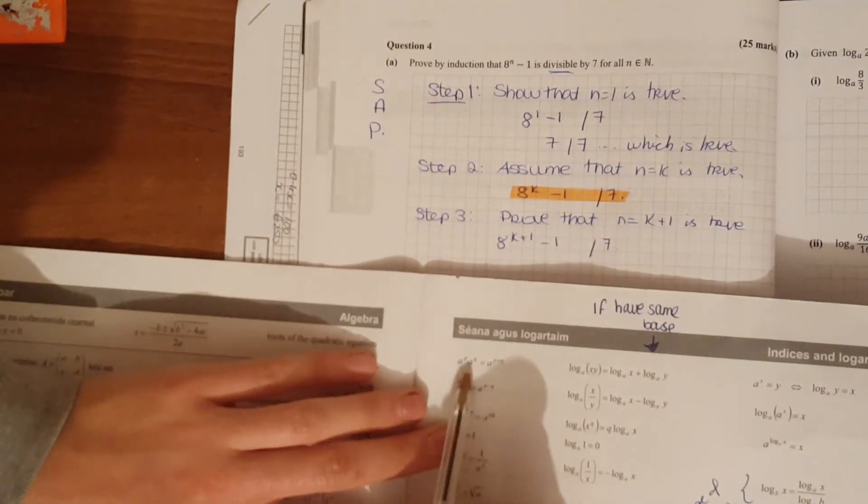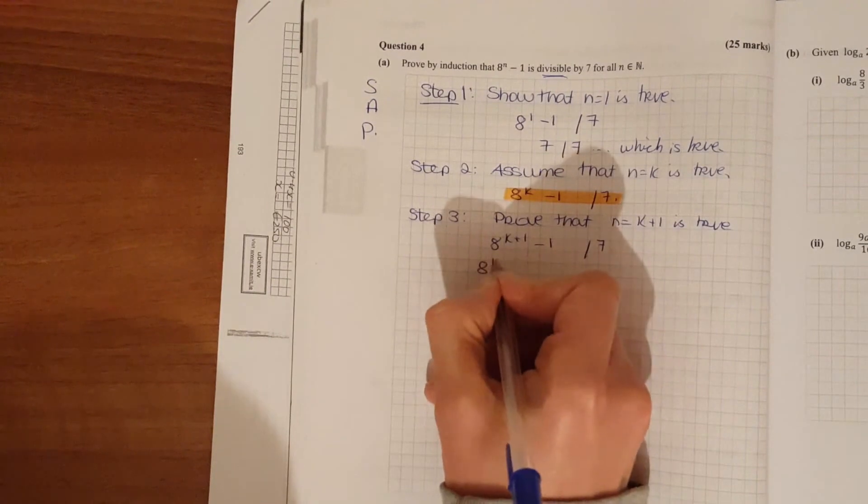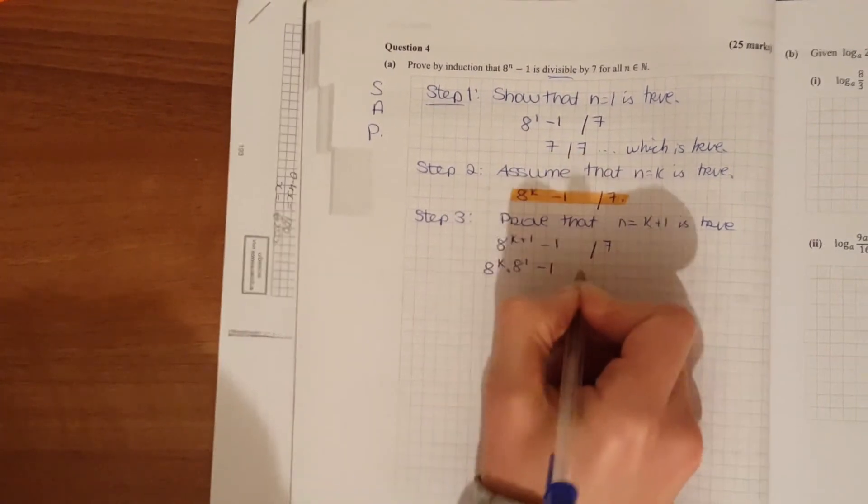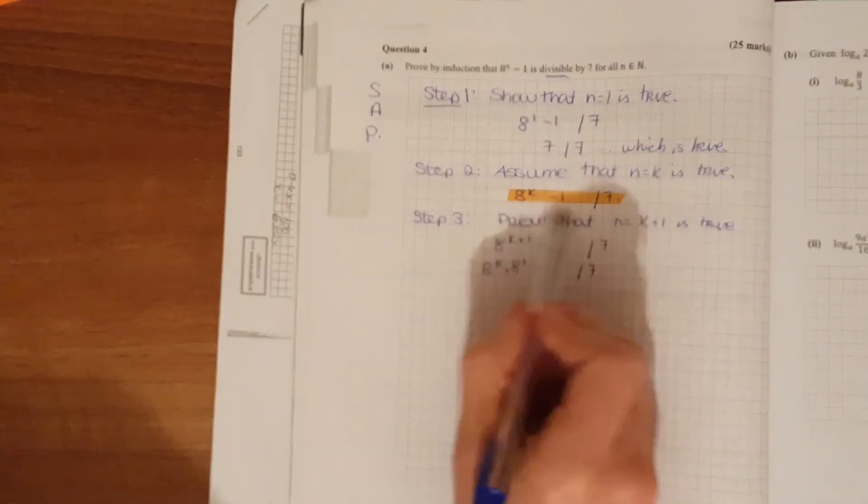So 8 to the k plus 1 is the same as 8 to the k times 8 to the 1. So 8 to the k times 8 to the 1 minus 1 divisible by 7.